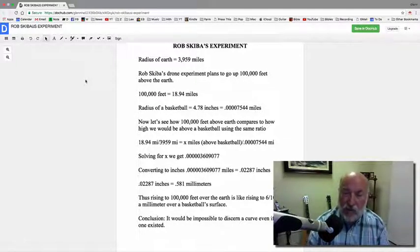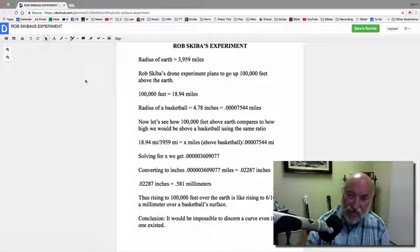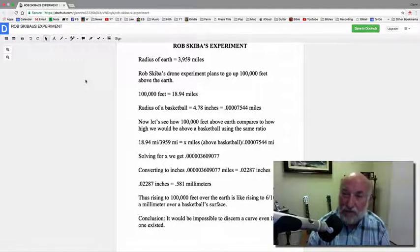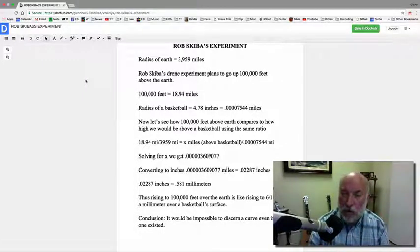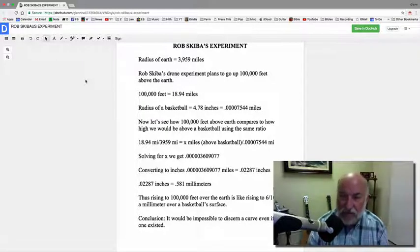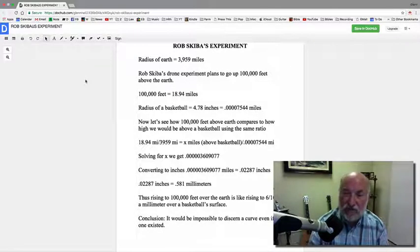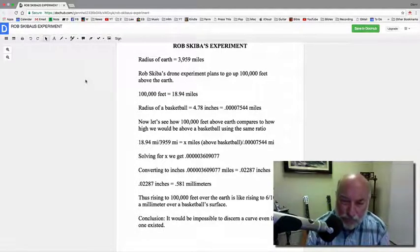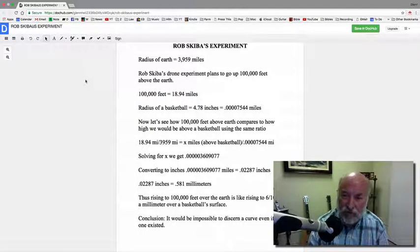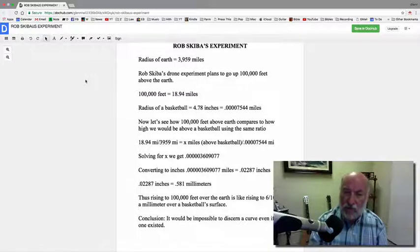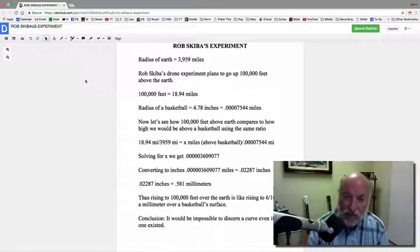The point is, if you were to go 100,000 feet above the Earth, that would be like rising to six-tenths of a millimeter over a basketball surface, or 0.02287 inches, not even three-hundredths of an inch. In other words, that's very, very small. That's hardly above the surface of the basketball at all. So my conclusion is, it would be impossible to discern a curve, even if one existed, if we rose to 100,000 feet over the Earth.